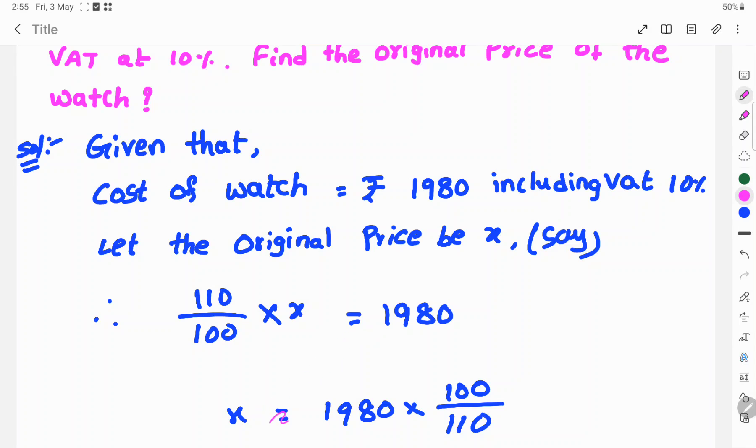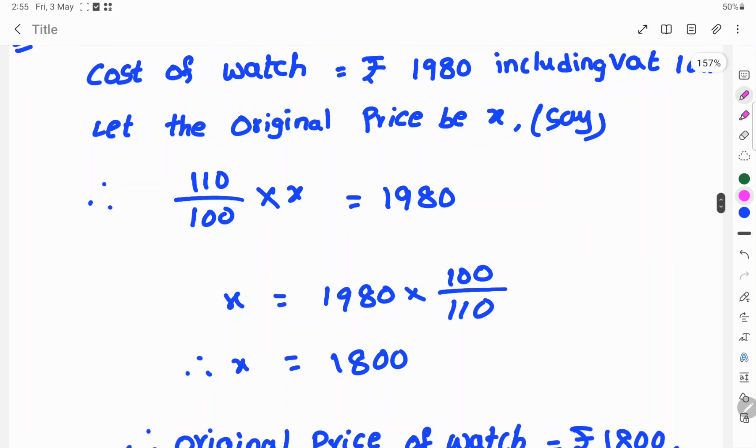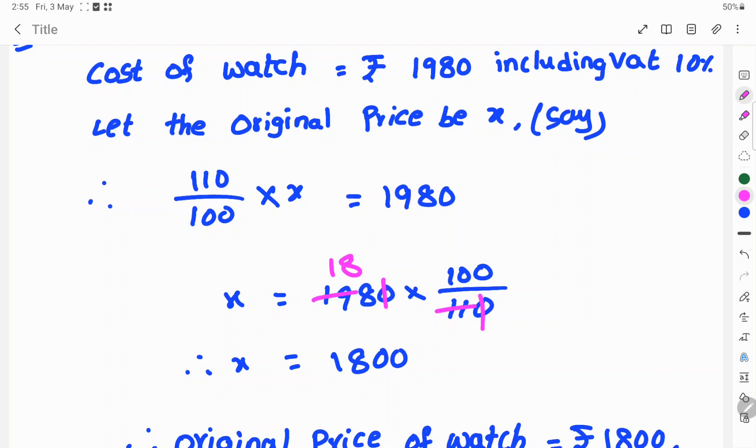So to find the X value, original price: X equals Rs. 1980 times 100 by 110. Here the zeros cancel out. 11 goes into 198, 18 times. So 18 times 100 equals Rs. 1800.